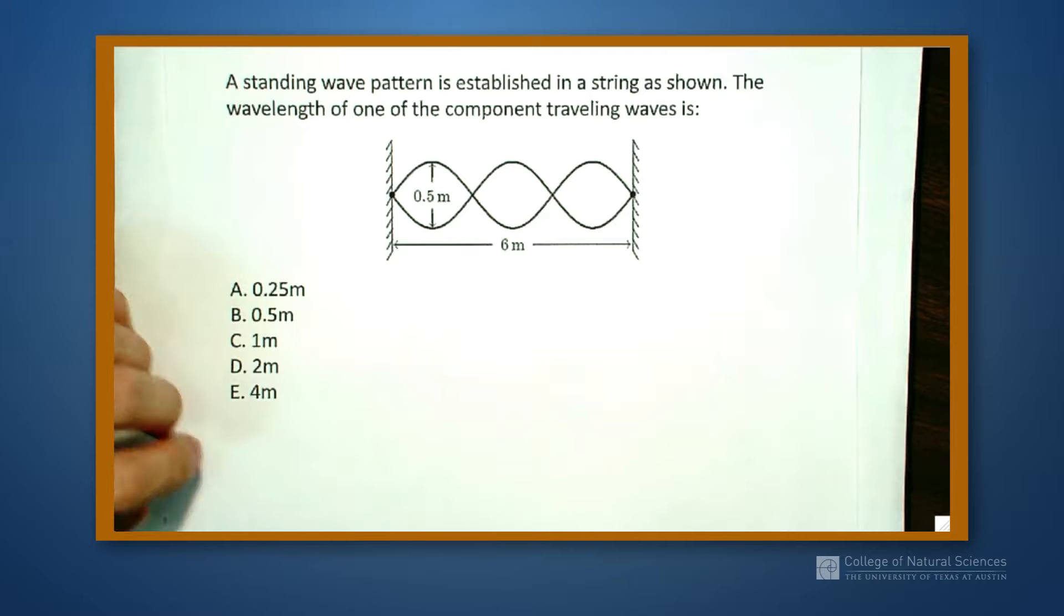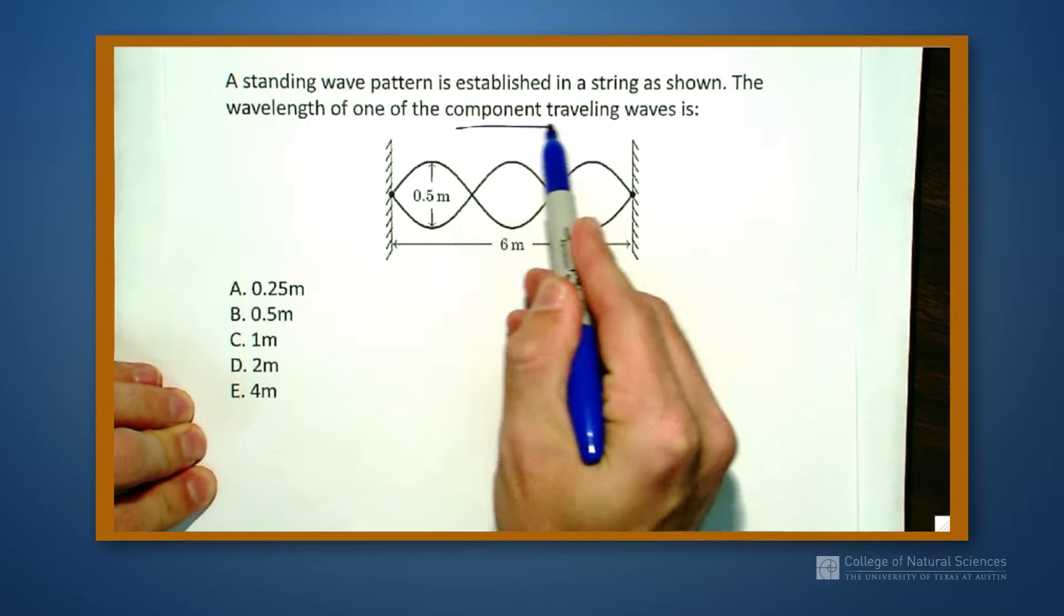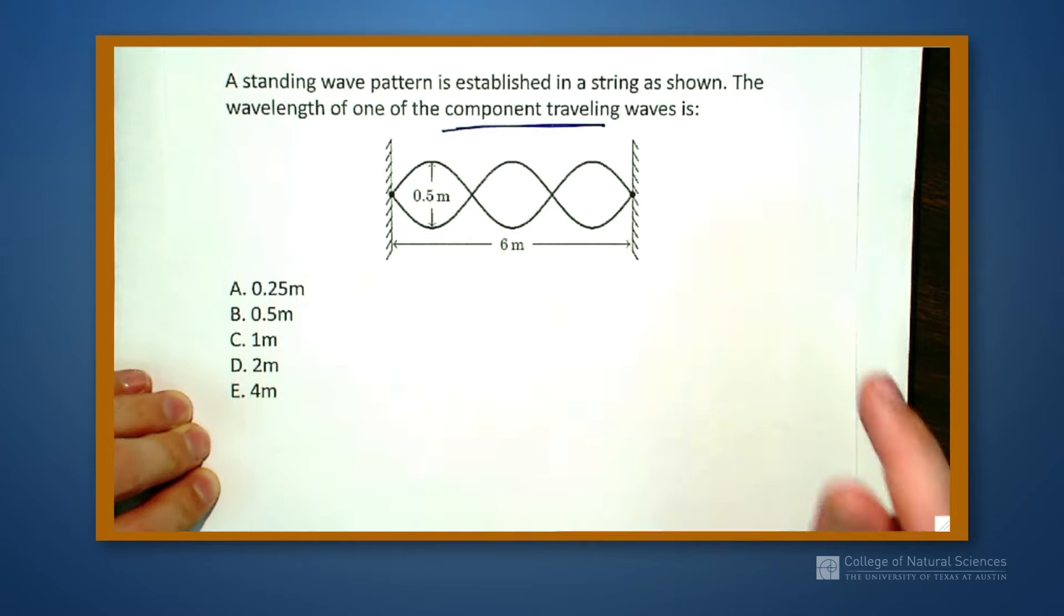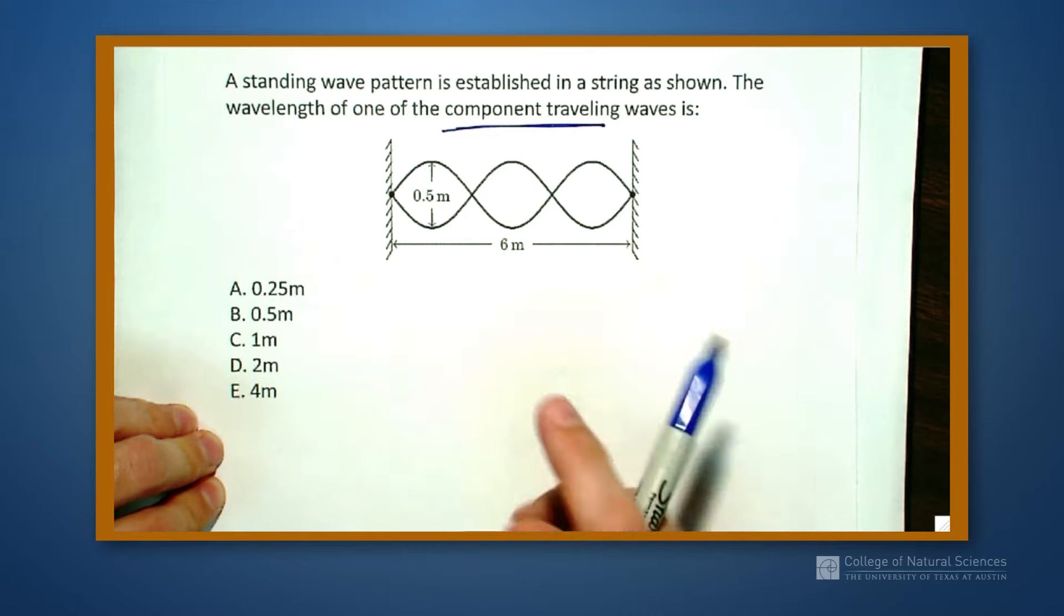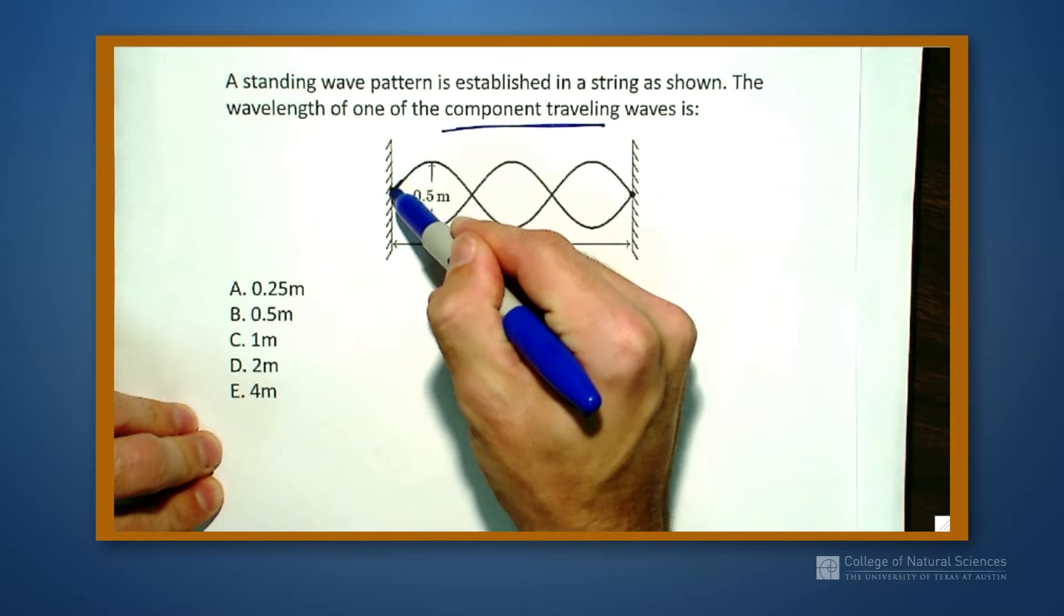Well we know that the wavelength of the component, the traveling wave component, is the same as the wavelength of the standing wave. So really all we have to do is figure out how long is one wavelength.